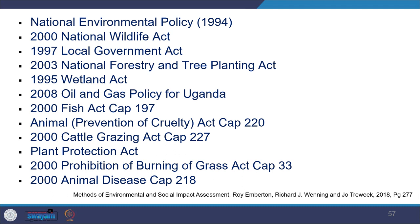Examples of country-level acts include fish act, animal prevention and cruelty act, cattle grazing act, prohibition of burning of grass act, and animal disease act. Since it is not possible to know all domain-specific legislation, it is important to have experts involved in the scoping of EIA so there is full understanding of the legislation affecting protection of wildlife in the country being studied.